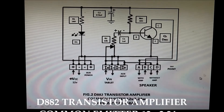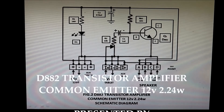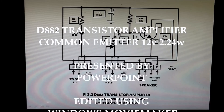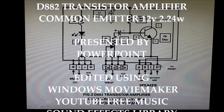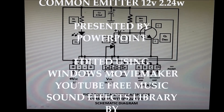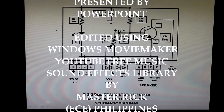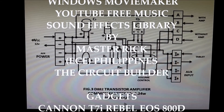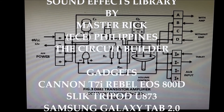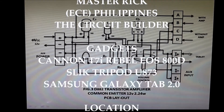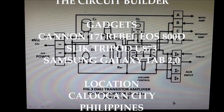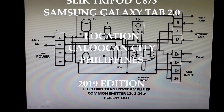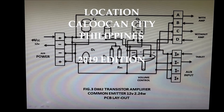We now have the transistor amplifier schematic diagram with headers for the voltage supply, auxiliary power, voltage input from the tablet, and auxiliary input. We also have the PCB layout with the voltage supply, input, and output. This is our design. Thank you for watching the video — bye!